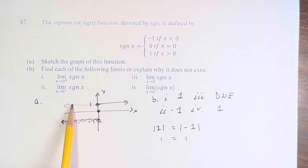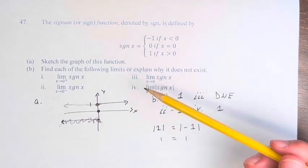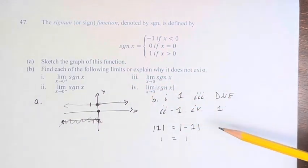And here you can see very clearly that if this is our new function, as we approach 0, we approach a value of 1. Therefore, the answers in b are 1, negative 1, does not exist, and 1.